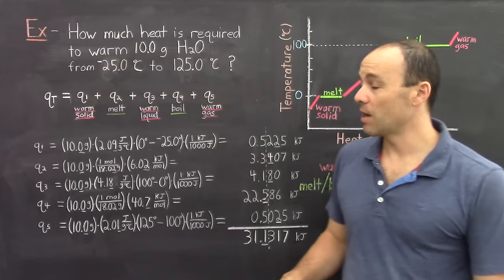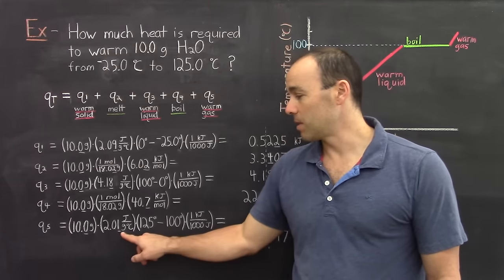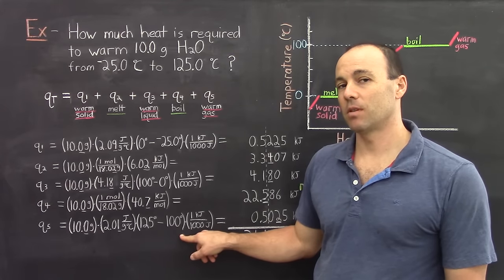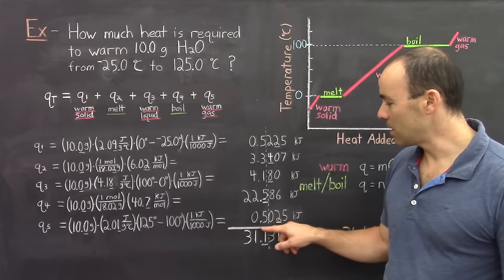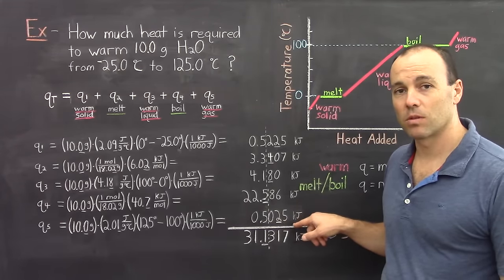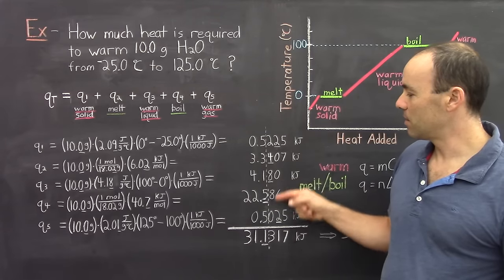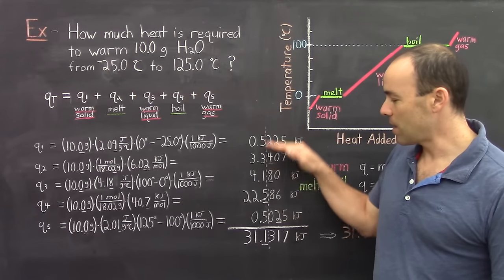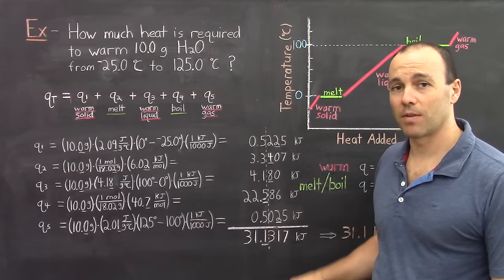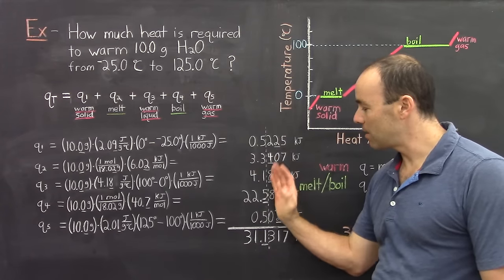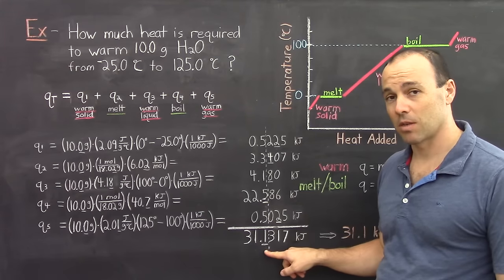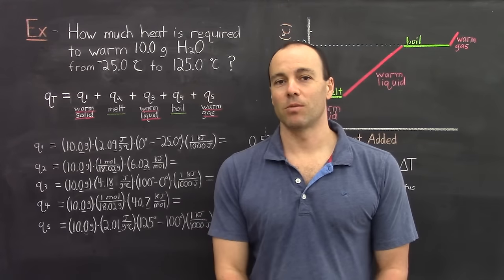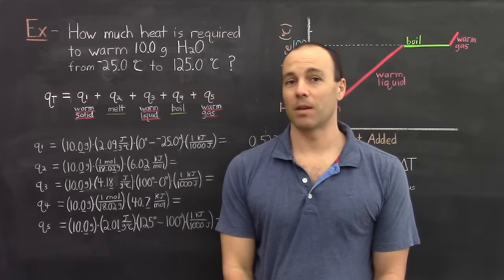The last stage is warming up what is now the gas: mass times the specific heat of the gas times the change in temperature, where the final temperature is 125 and the initial temperature is 100. Converting to kilojoules gives 0.5025 kilojoules. In all five calculated energies, the last significant figure was underlined. Adding them together using the addition and subtraction rule for significant figures — the answer is limited to the tenths position — giving a final answer of 31.1 kilojoules to raise the temperature from cold ice all the way up to hot gas.